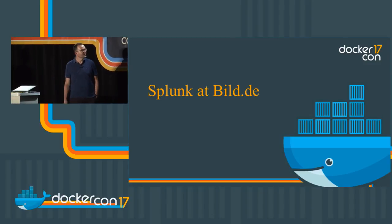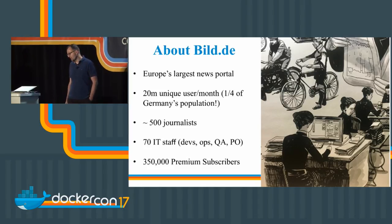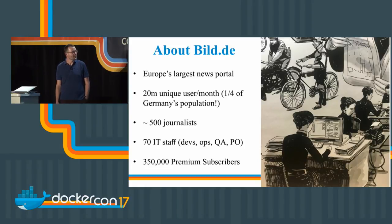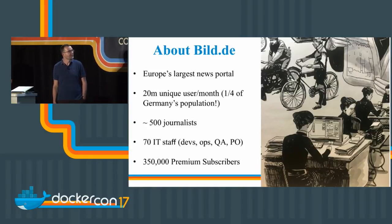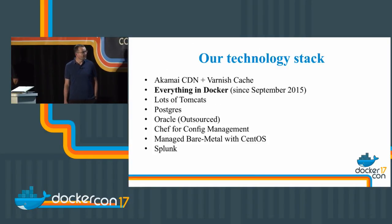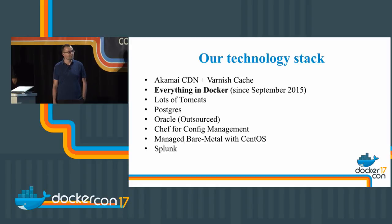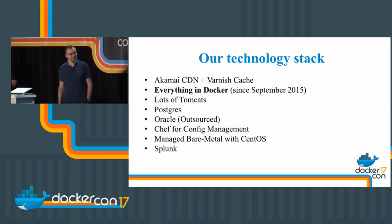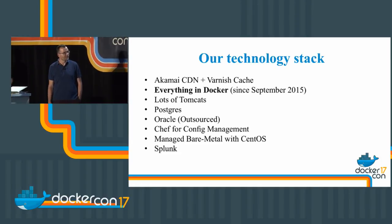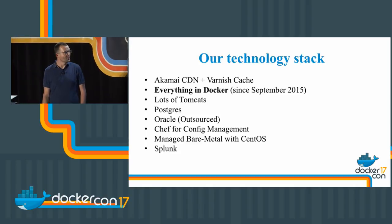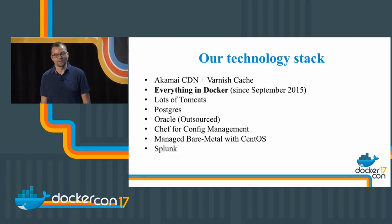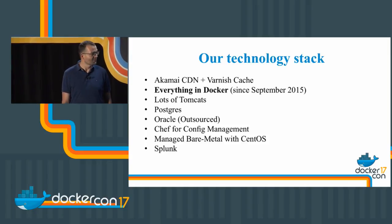I'm Christian, head of IT operations at Build.E. Who is Build.E? We are Europe's largest news portal. We have roughly 20 million unique users per month, which is a quarter of Germany's population. We have roughly 500 journalists around the globe, 70 IT staff, a premium content strategy, and 350,000 subscribers. Our technology stack is simple: we use Akamai as a CDN, Varnish Cache, and Docker for everything — everything meaning databases, our Splunk indexer, forwarder, Tomcats, Postgres, etc. Oracle is the only thing outsourced. We use Chef for configuration management and Splunk.